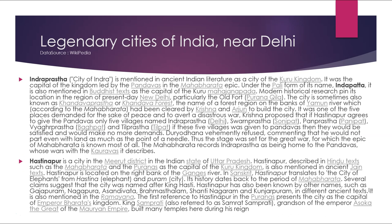Legendary cities of India near Delhi — Indraprastha. The city of Indra is mentioned in ancient Indian literature as a city of the Kuru kingdom. It was the capital of the kingdom led by Pandavas in the Mahabharata epic, known under the Pali name Indrapath. It is also mentioned in Buddhist texts as the next capital of the Kuru Mahajanapada. Modern historical research pins its location in the region of present-day New Delhi, particularly the old fort, the Purana Qila. The city is sometimes also known as the Khandavaprastha, named after the Khandava forest on the banks of the Yamuna river, which according to the Mahabharata was cleared by Krishna and Arjun to build the city.